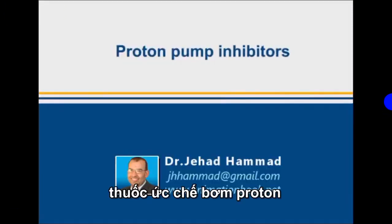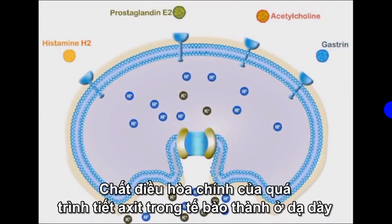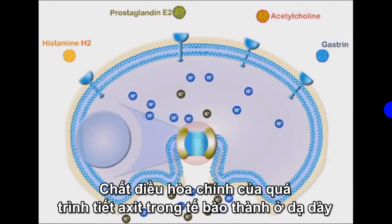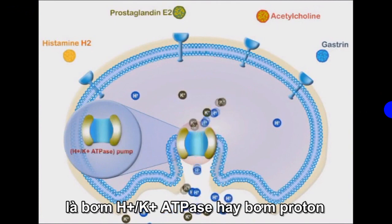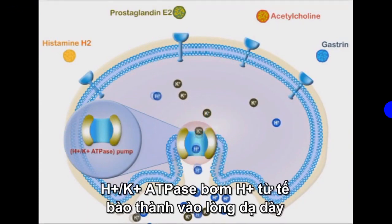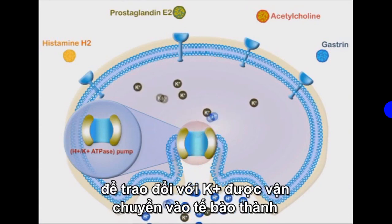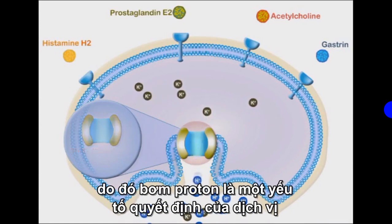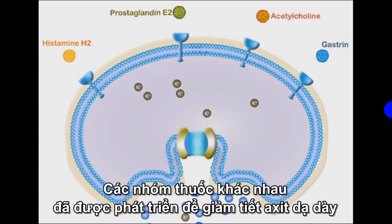The main regulator of acid secretion in gastric parietal cells is hydrogen-potassium ATPase pump, more commonly known as proton pump. The hydrogen-potassium ATPase enzyme system pumps protons from parietal cells into the gastric lumen in exchange with potassium ions, which are transported into parietal cells. Therefore, proton pumps are the main acidifying factor of gastric fluids.